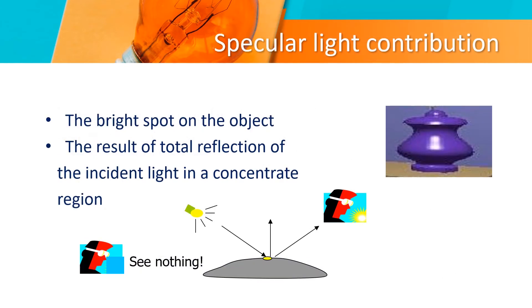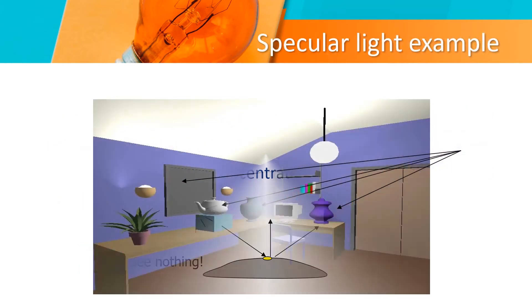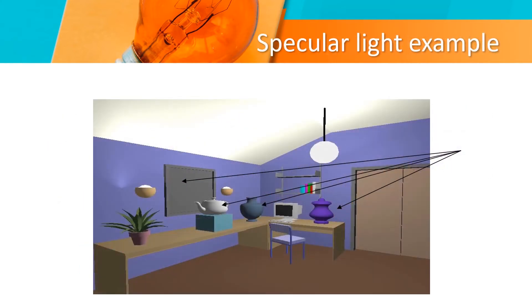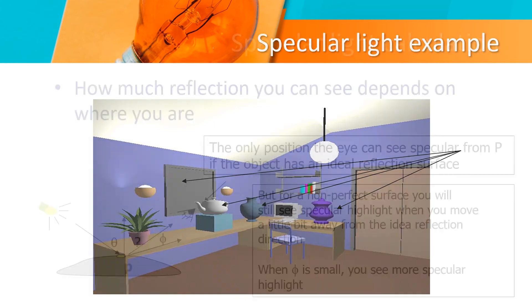Specular Light Contribution: the bright spot on the object, the result of total reflection of the incident light in a concentrated region. A specular light example is given below.